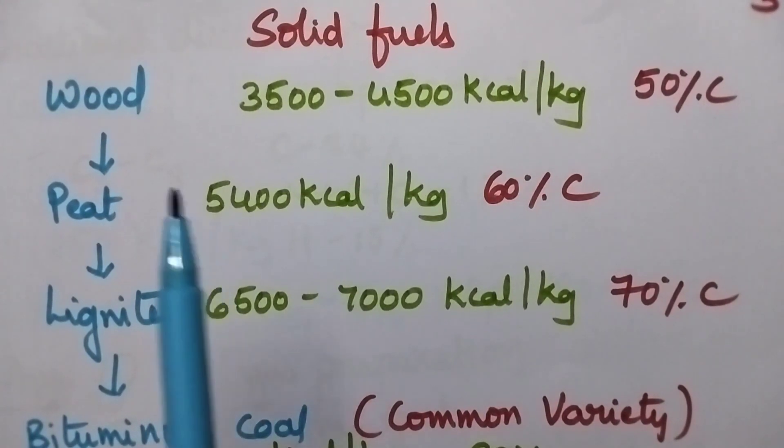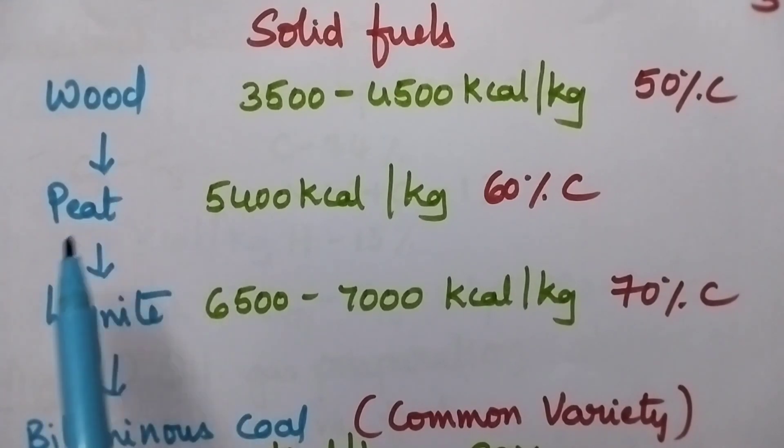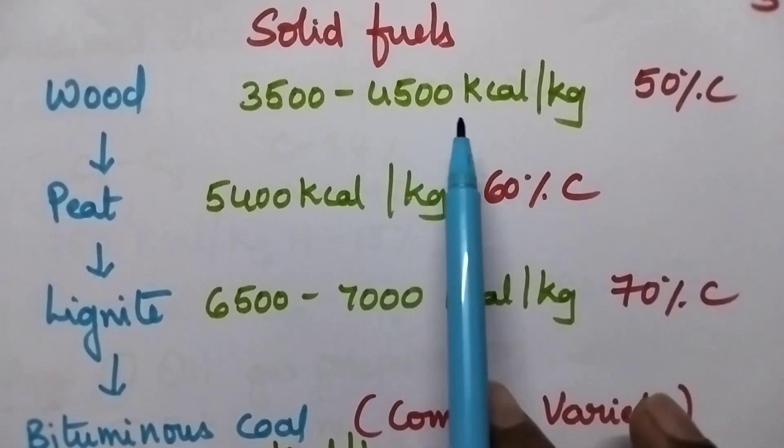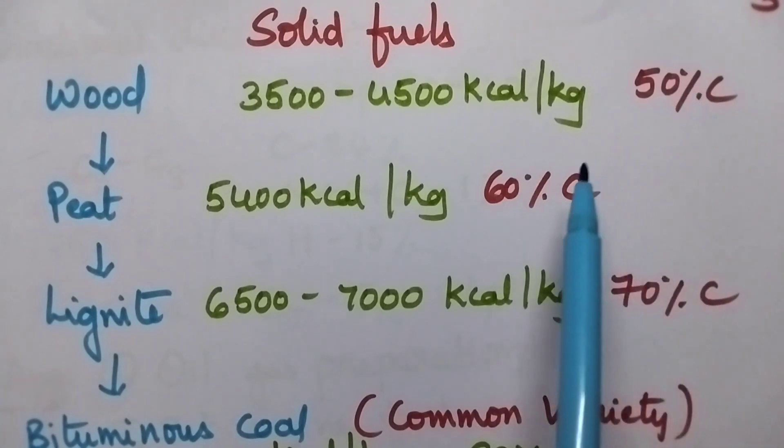Moving to the solid fuels, wood can be converted into coal in different steps. Initially wood is converted into peat, then to lignite. Next it is converted into bituminous coal and finally anthracite coal is obtained. Here, the percentage of carbon present in the wood is 50%. The calorific value is totally based upon the percentage of carbon. As the percentage of carbon increases, the calorific value also increases.